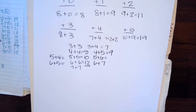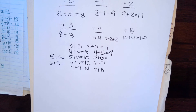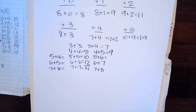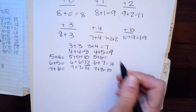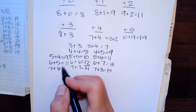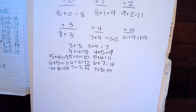Seven plus seven is fourteen, so what is seven plus eight? Fifteen. You got it. And what's seven plus six? One less than fourteen. What comes before fourteen when we're counting? Thirteen, right? Yeah.